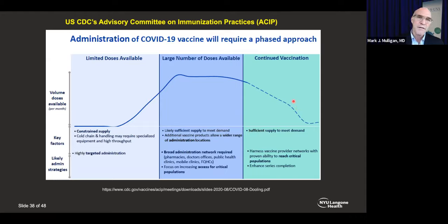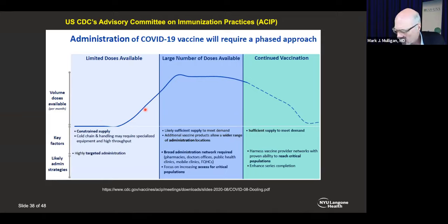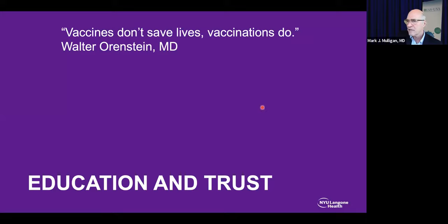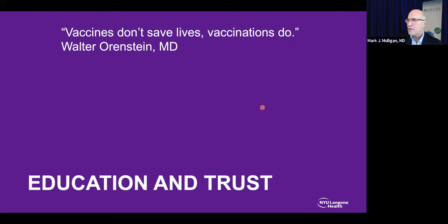We've got 66% of adults with a single dose — we have to keep pushing. We don't know exactly what the herd immunity threshold is, but certainly higher is better. I hope all of you will be vaccine advocates. Vaccines don't save lives — vaccinations do. A wise man, Walter Orenstein, one of my former colleagues at Emory, has always said that — and it's so true. The vaccine on the shelf or in the vial doesn't do anything; we've got to get these into our patients' arms. That takes education and trust.